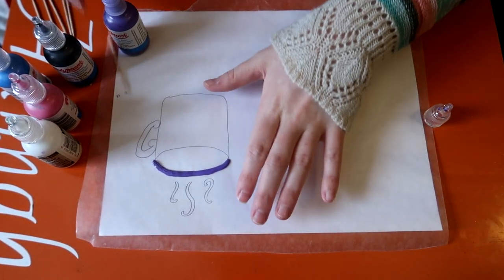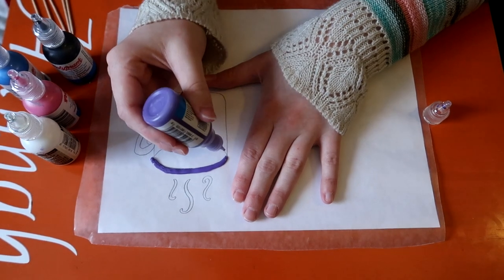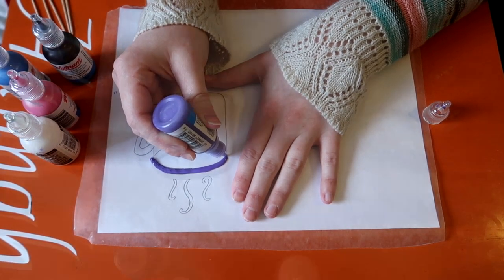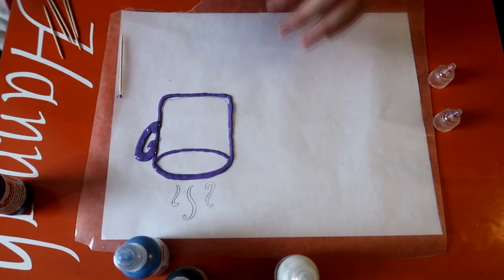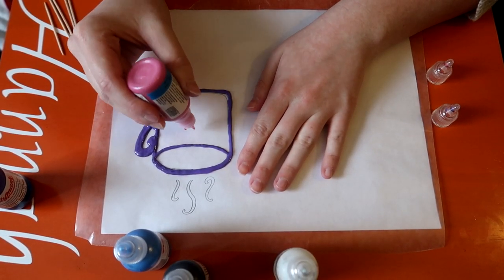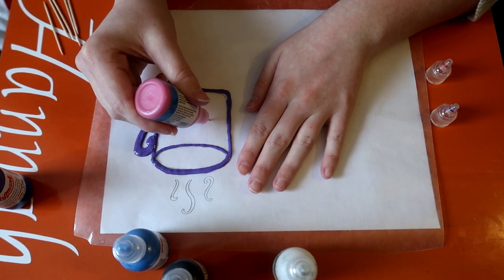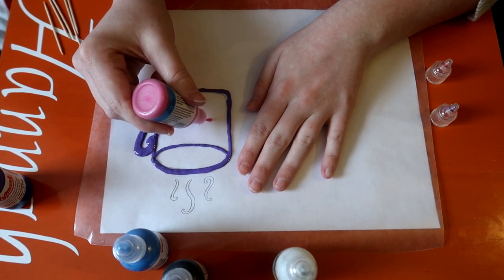And then you just simply continue. Alright, so the outline is done and I am going to do a little snowflake in the middle of the coffee cup, just to give it a bit of a design.